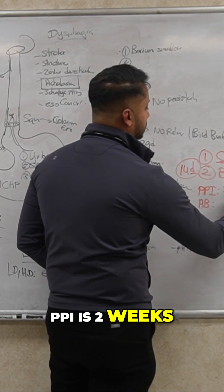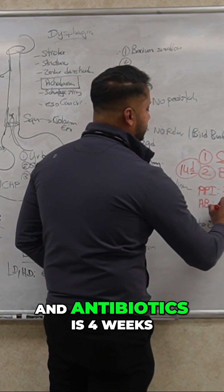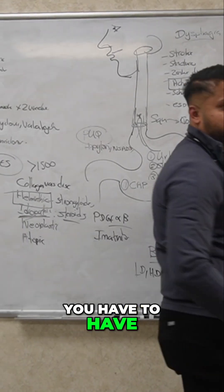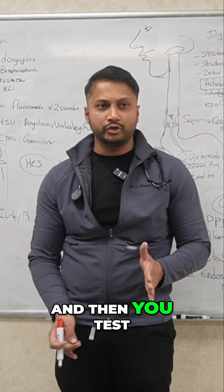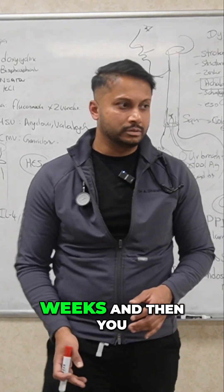PPI is two weeks and antibiotics is four weeks. Okay? You have to have stopped antibiotics four weeks and then you test. For PPI it's two weeks, and then you test.